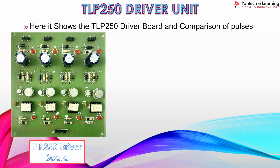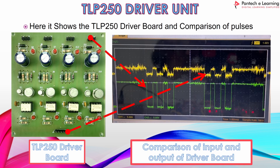Here we can see the comparison of pulses. The yellow color waveform is the pulse generated by the PIC controller, isolated and given to the main board as 12 to 15V. The PIC microcontroller gives a pulse of around 3.325V. Using this TLP250 driver board, we can amplify or isolate the pulse, and the amplified voltage increases up to 12 to 15V.